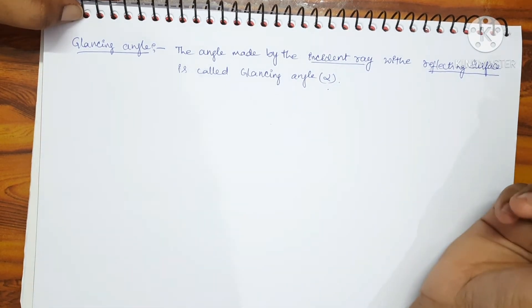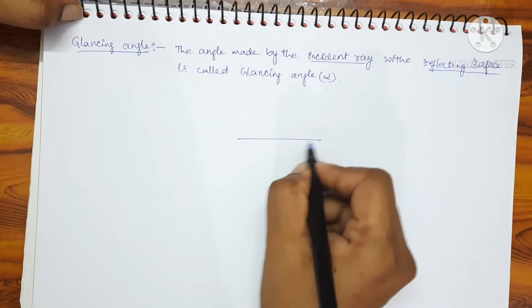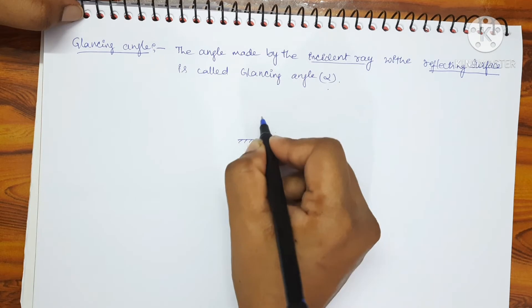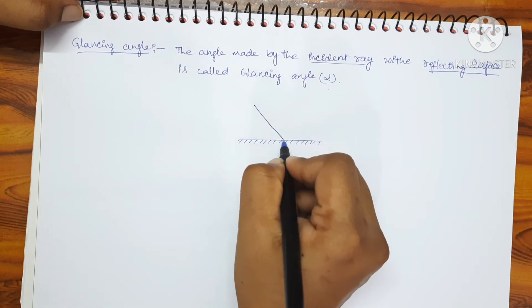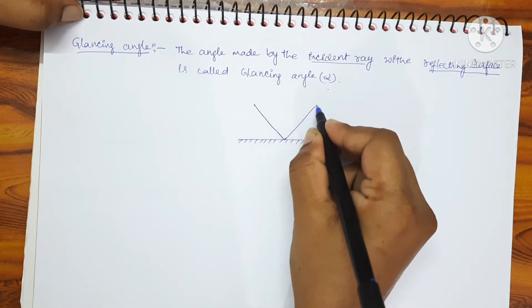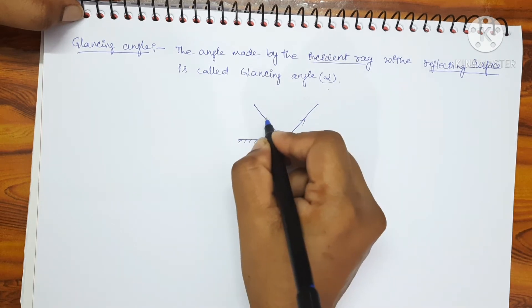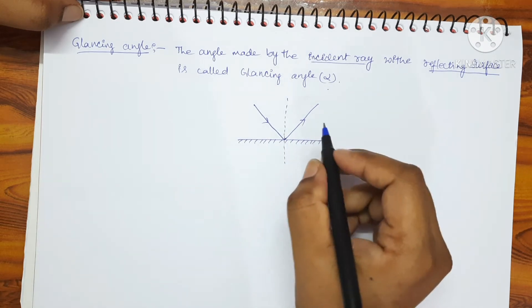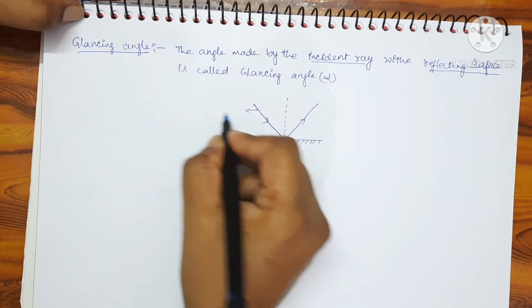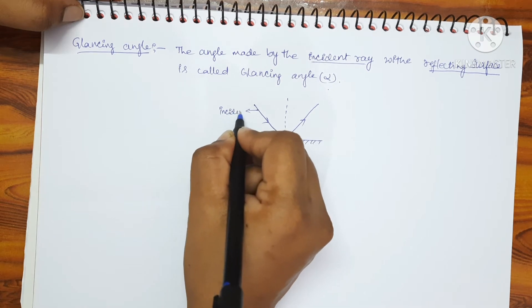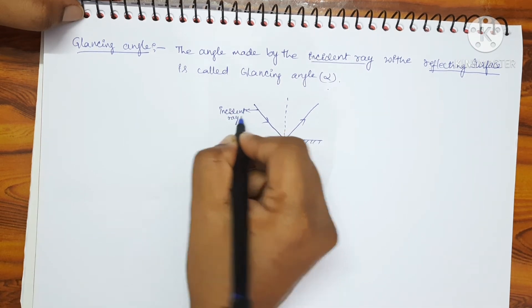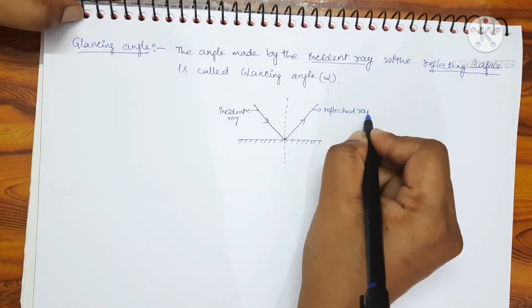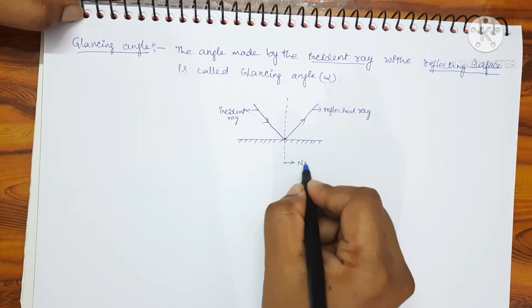Let us consider the plane mirror as the reflecting surface. A ray of light is incident on a plane mirror and reflected back into the same medium. A line drawn perpendicular to the reflecting surface is called the normal. This is the incident ray, this is the reflected ray, and this line is called the normal.